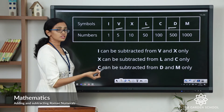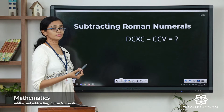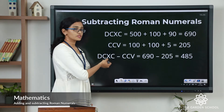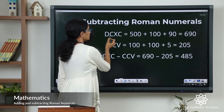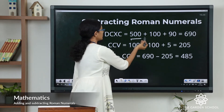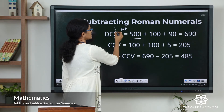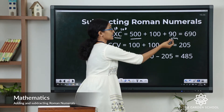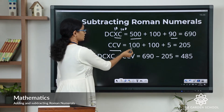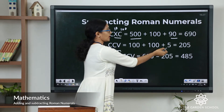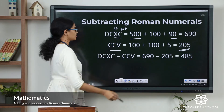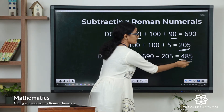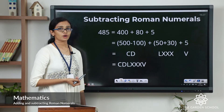Let's see our subtraction example. The equivalent value of DCXC: D represents 500, C is 100, and XC — since X is 10 and C is 100, that's 100 minus 10 equals 90 — so the total value is 690. The second numeral: C represents 100, then 5 — total value is 205. So we have 690 minus 205 equals 485. Now how do we write 485 in Roman numerals?